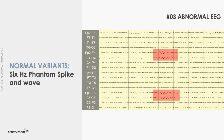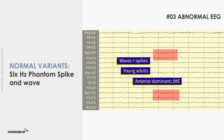6 Hz phantom spike and wave occurs as bursts of miniature spike and wave complexes at 6 Hz, rather than the usual 2 to 4 Hz. The term 'phantom' is used because of their transient or evanescent nature, as they usually last for less than 1 second. In these spike and wave complexes, the waves are of equal or higher amplitude than the preceding spikes. Spikes are usually less than 40 microvolts in amplitude and 40 milliseconds in duration.